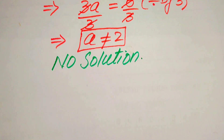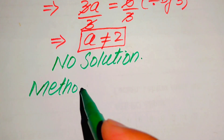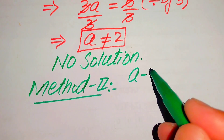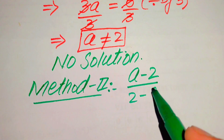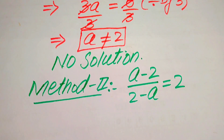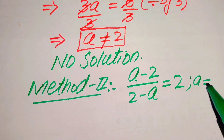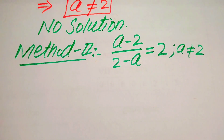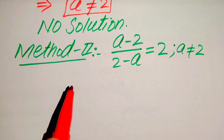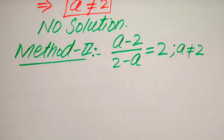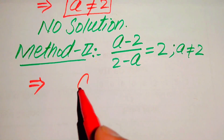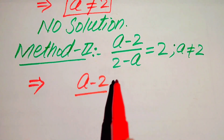Now we solve this problem using the second method. The given equation is: (a minus 2) divided by (2 minus a) equals 2, with the condition that a is not equals to 2. In the second method we find the value of a using a different approach or technique.